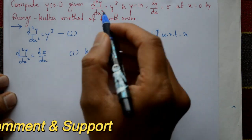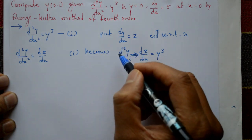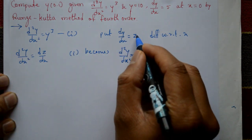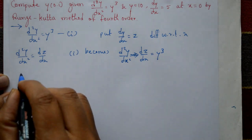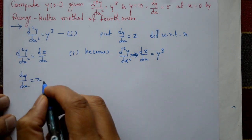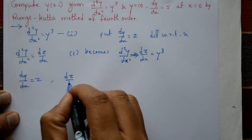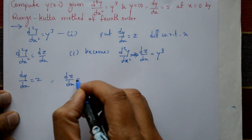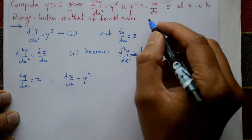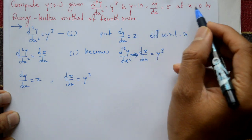We reduce the second-order differential equation to two first-order equations: the first is dy/dx = z, and the second is dz/dx = y³. The initial conditions are y = 10, dy/dx = 5 at x = 0.